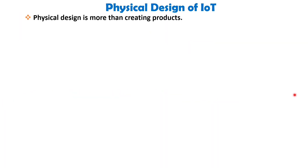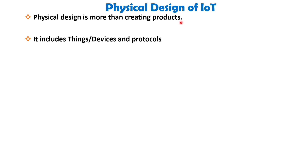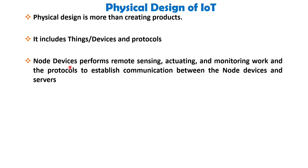The physical design of an IoT system is more than just creating a product. It includes things or devices and protocols that are used to build an IoT system. All these things or devices are called node devices, and every device has a unique identity that performs remote sensing, actuating and monitoring work. The protocols of this physical design are used to establish communication between the node devices and the servers over the internet.